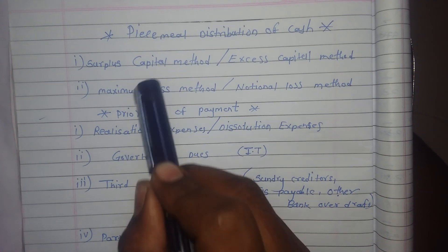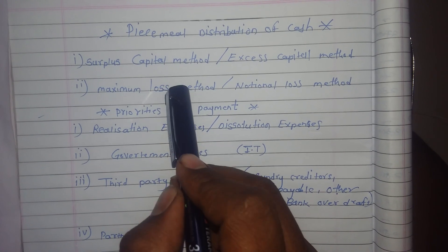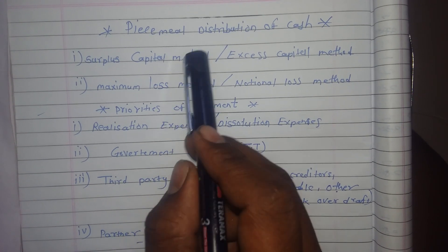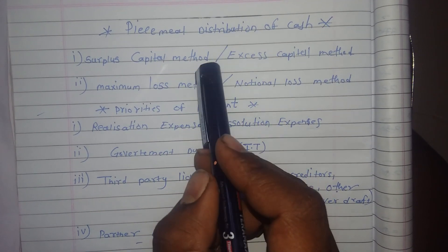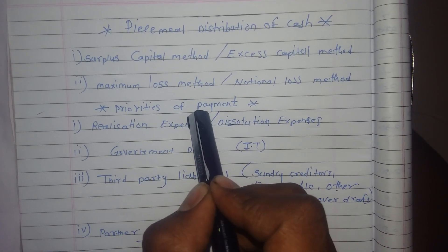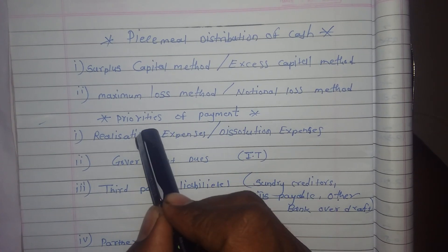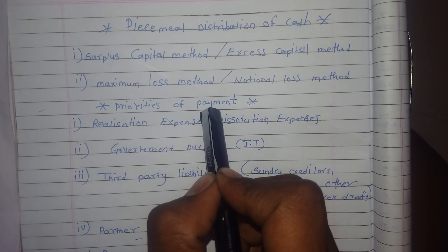When we calculate these two methods of Piecemeal distribution of cash, we have some priorities of payment, which are called priorities of payment.